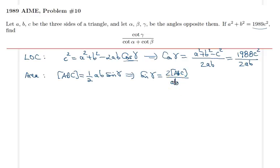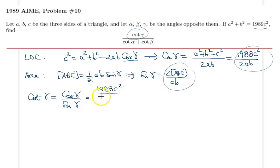Now I can find cotangent gamma, the numerator of our expression, which is cosine gamma divided by sine gamma. So I plug in what I found earlier: 1988c²/(2ab) divided by 2·Area[ABC]/(ab). Luckily the ab's cancel out, so I have this very nice expression: 1988c²/(4·Area[ABC]).